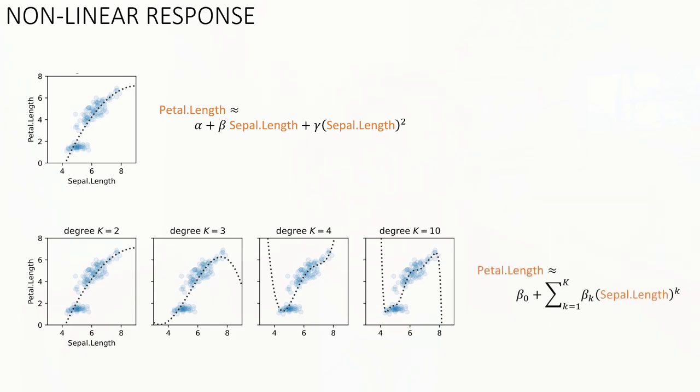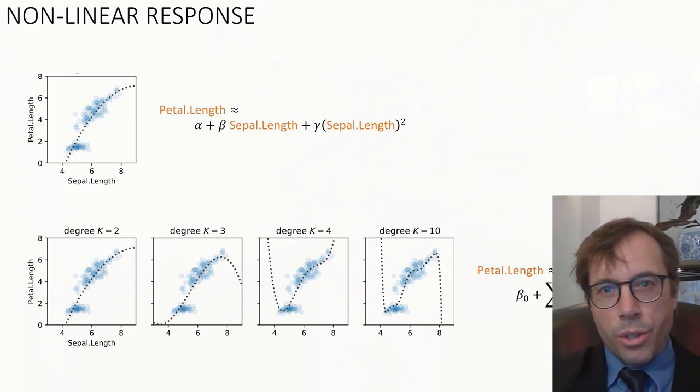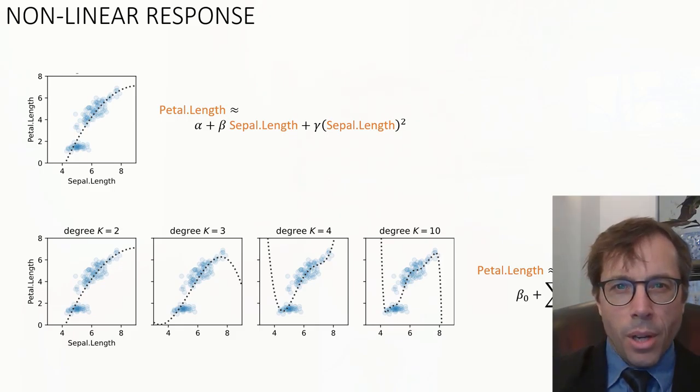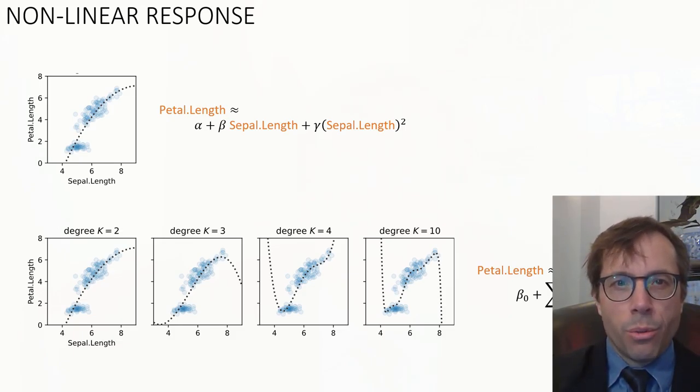The linear model for this is pretty obvious. We just say that petal length is a polynomial. Petal length is beta 0 plus sum from little k equals 1 up to big K, beta sub little k times sepal length to the power of k. This definitely produces a wiggly line, which we may well want to fit. But I think generally speaking, I think this is a pretty crummy type of model because it just goes haywire outside the region where we have data.